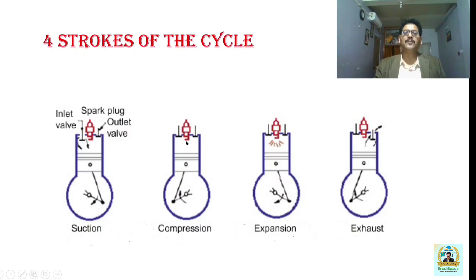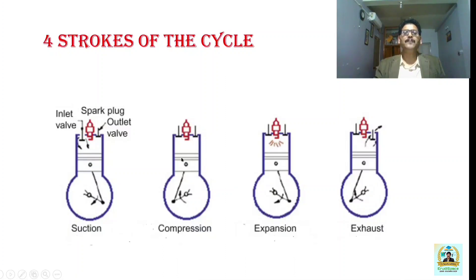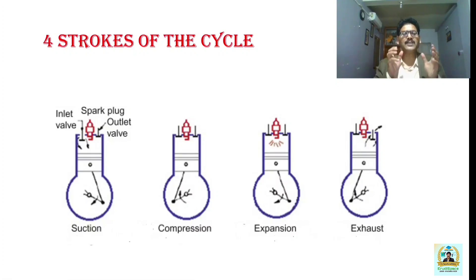In the compression stroke, the piston moves from BDC to TDC, compressing the charge to the clearance volume. Both inlet and exhaust valves are in closed position. Just before the compression process is over, the spark plug gives an electric spark to ignite the compressed air-fuel mixture. Due to compression, the temperature and pressure of the charge are significantly raised, and once it contacts the spark, combustion takes place, developing a large amount of thermal and pressure energy.